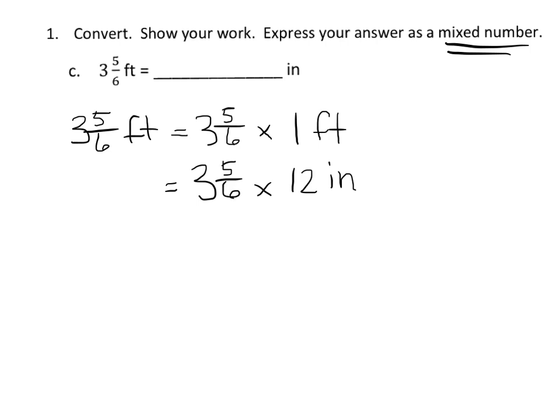So now we have three and five-sixths times 12 inches. Now we're going to multiply. A couple of ways we can multiply this problem. The traditional way is to convert this mixed number into an improper fraction. So three times six is 18, and then 18 plus five is 23.